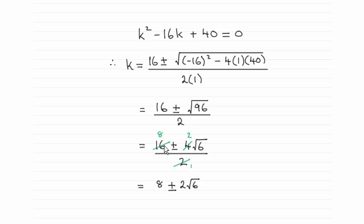And then 2 cancels into both of these terms here. It's a common factor on the top. So that gives us our 8 plus or minus 2 root 6.